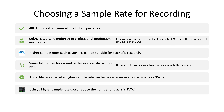Choosing a sample rate for recording: 44.1 kilohertz was an obvious choice for audio CD production. You can still use 44.1 kilohertz, but 48 kilohertz is great for general production purposes. As mentioned earlier, 48 is for video production, including TV broadcast and YouTube. So if you are making a soundtrack for video, you would want to set your sample rate at 48 kilohertz from the start of your project. Changing the sample rate in the middle of a project is not a good idea, so think about the target sample rate of your finished product and make the decision at the beginning.